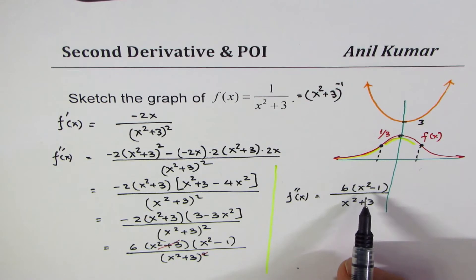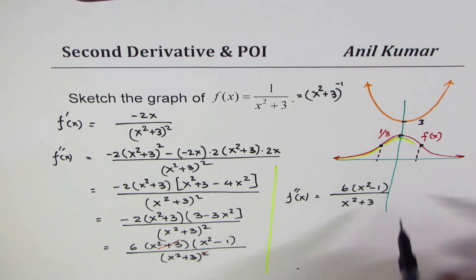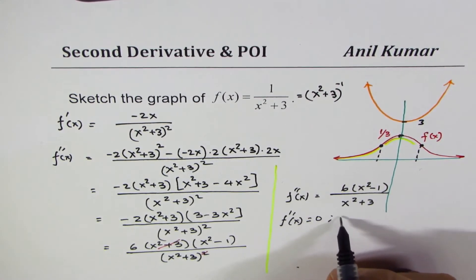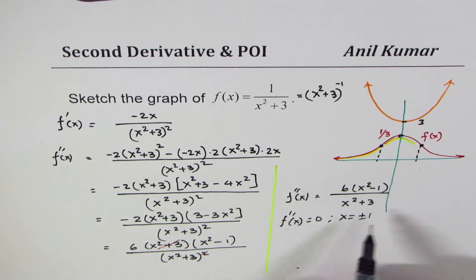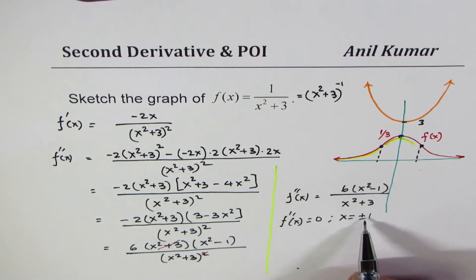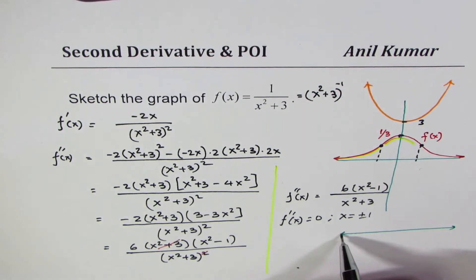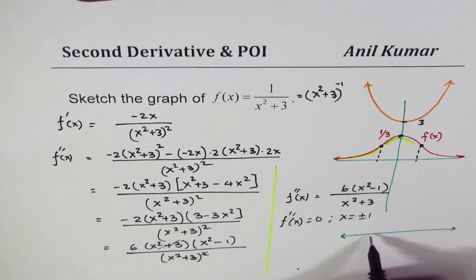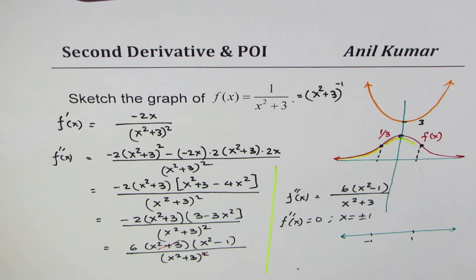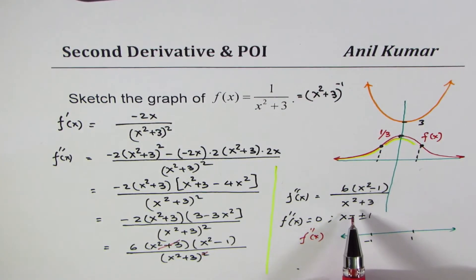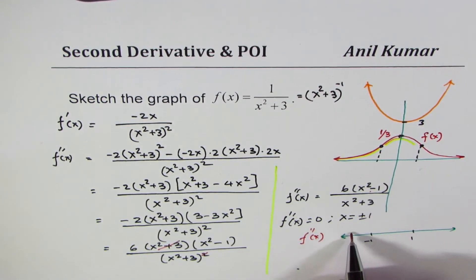The critical points occur when the second derivative equals 0: 6(x² − 1) = 0 gives x = ±1. So there could be points of inflection at these two points. On the number line, mark −1 and +1 and analyze the sign of f''.